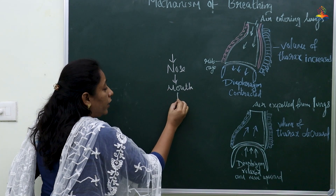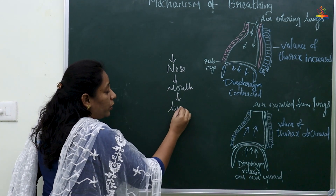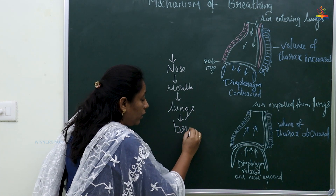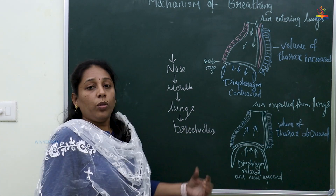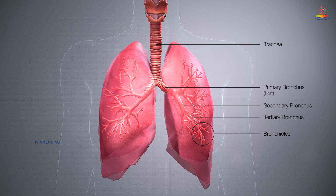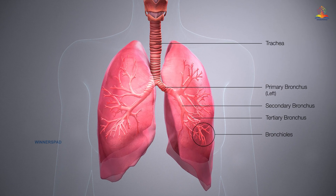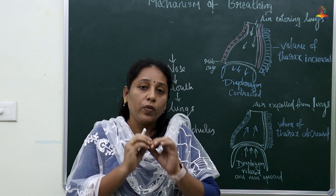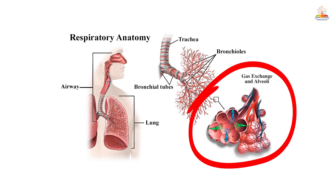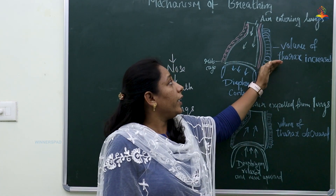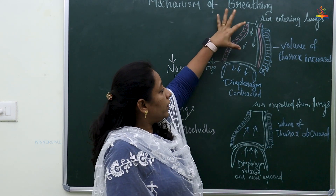Air first enters through the nose, then through the mouth, then into the lungs. Last class we discussed how it enters through the bronchioles, where branches expand into a sac-like structure called alveoli, which are surrounded by blood vessels called capillaries.